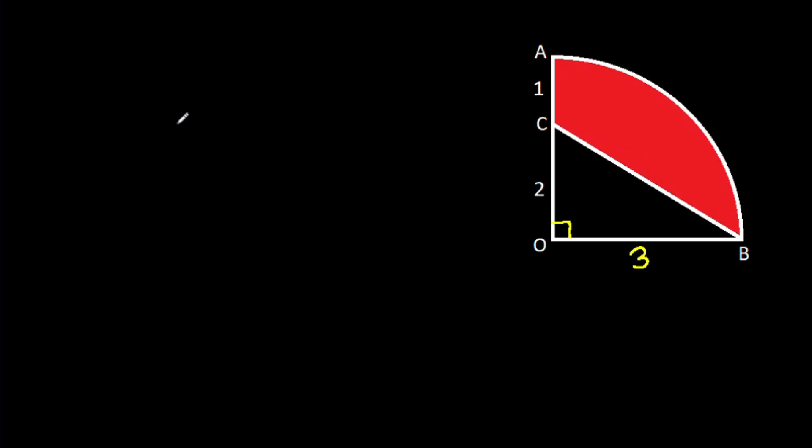And shaded area is area of quarter circle AOB minus area of triangle COB.